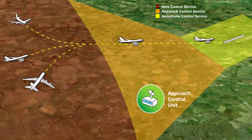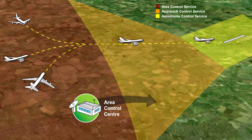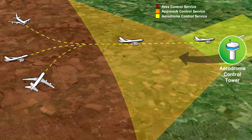The approach control service can be provided by an approach control unit. However, when it is necessary or desirable, the functions of the approach control service can be combined with and provided by either an area control centre or an aerodrome control tower. Finally, the aerodrome control service is provided by an aerodrome control tower.